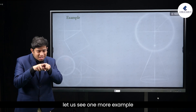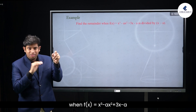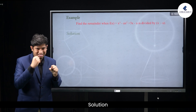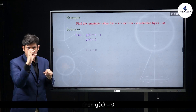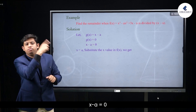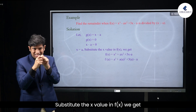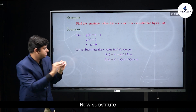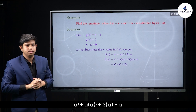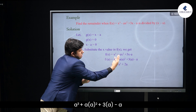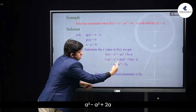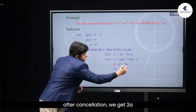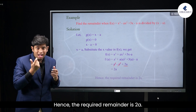Example: Find the remainder when f(x) = x³ - ax² + 3x - a is divided by x - a. Solution: Let g(x) = x - a, then g(x) = 0 gives x = a. Substituting x = a into f(x): f(a) = a³ - a·a² + 3a - a = a³ - a³ + 2a. After cancellation, we get 2a. Hence, the required remainder is 2a.